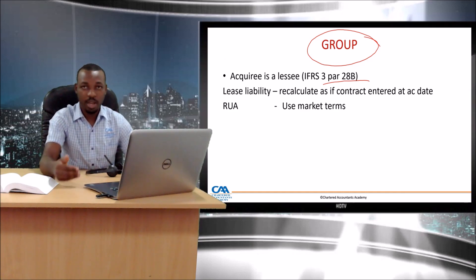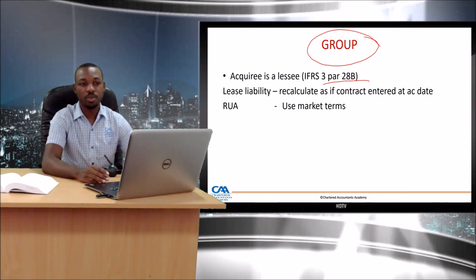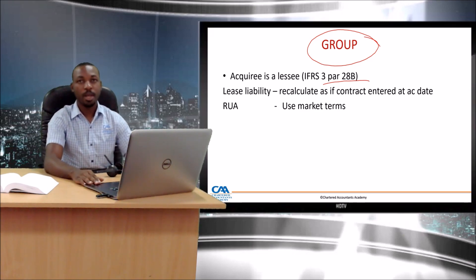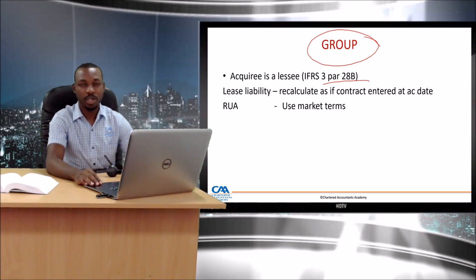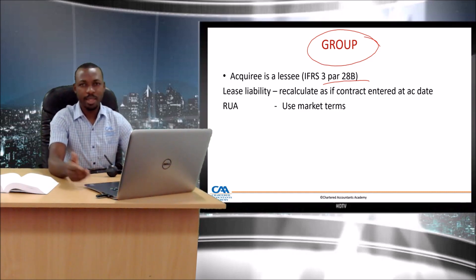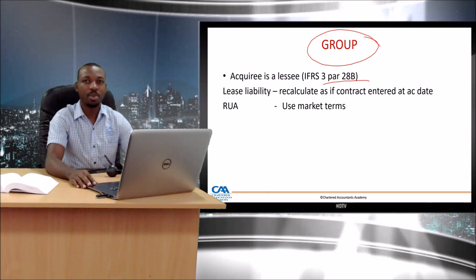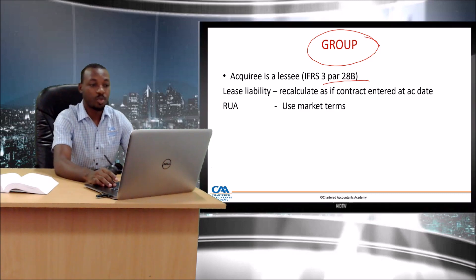The lease liability is discounted based on the rate applicable on the acquisition date. This is important because people often struggle linking IFRS 16 to IFRS 3. There are also possibilities where the acquirer and acquiree had lease contracts together before the acquisition, resulting in a reacquired right, but that area has been toned down and you'll cover those concepts more fully at CTA level.